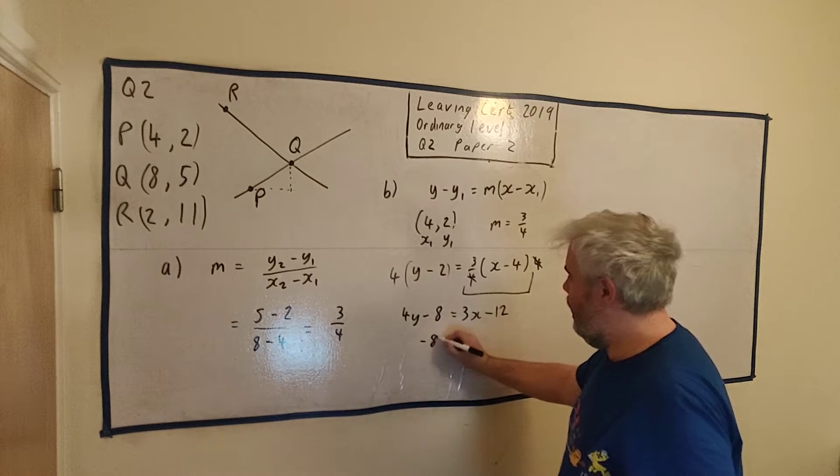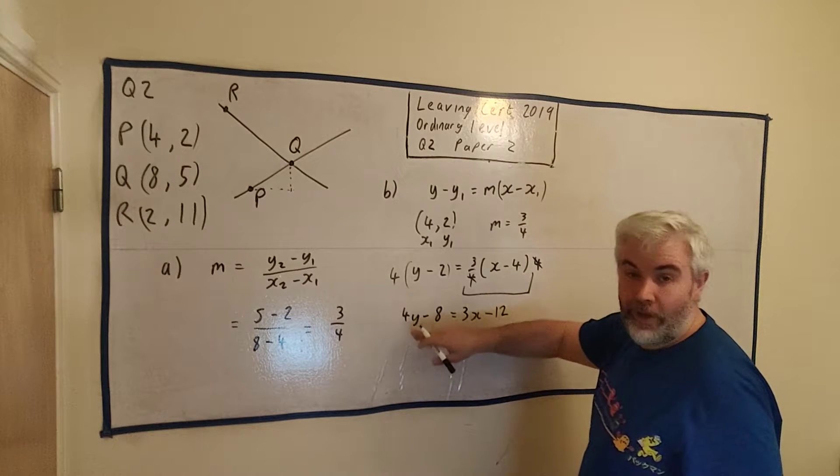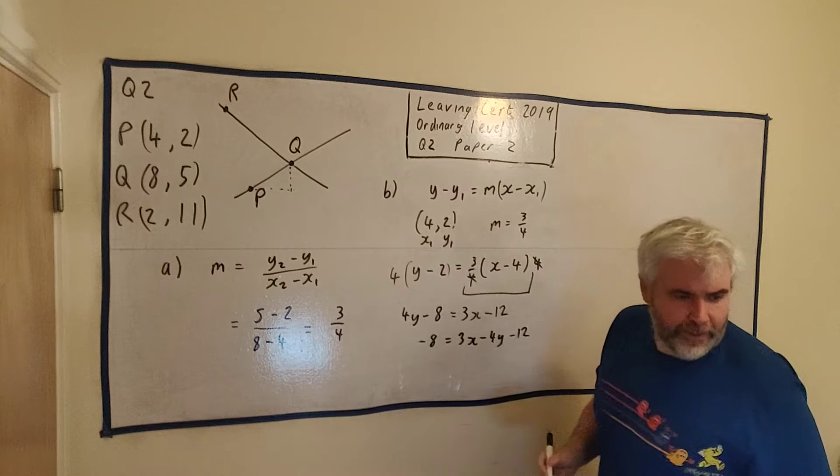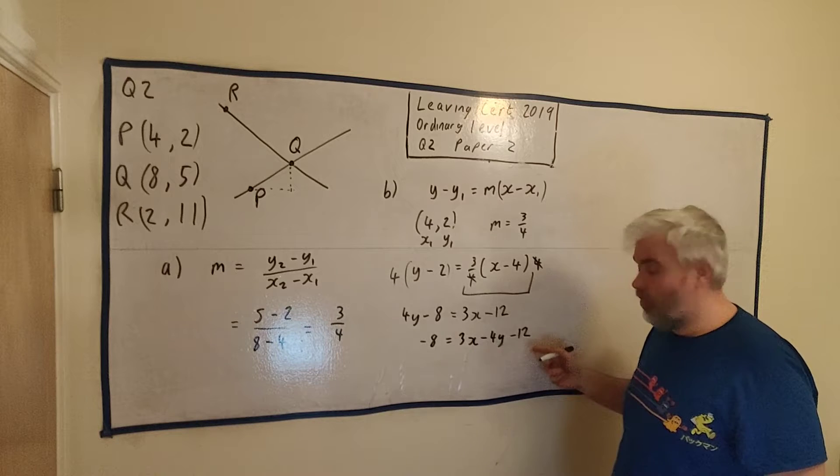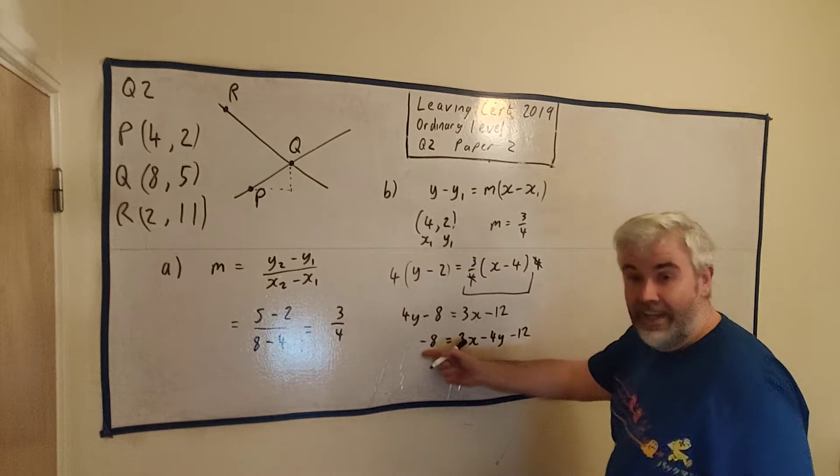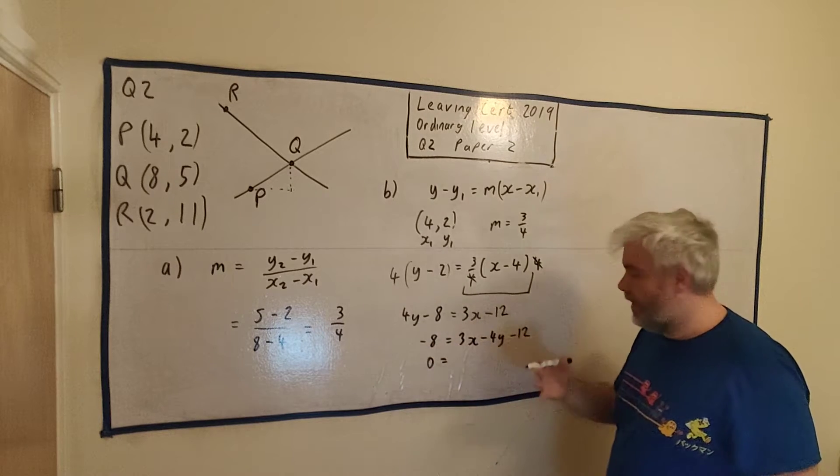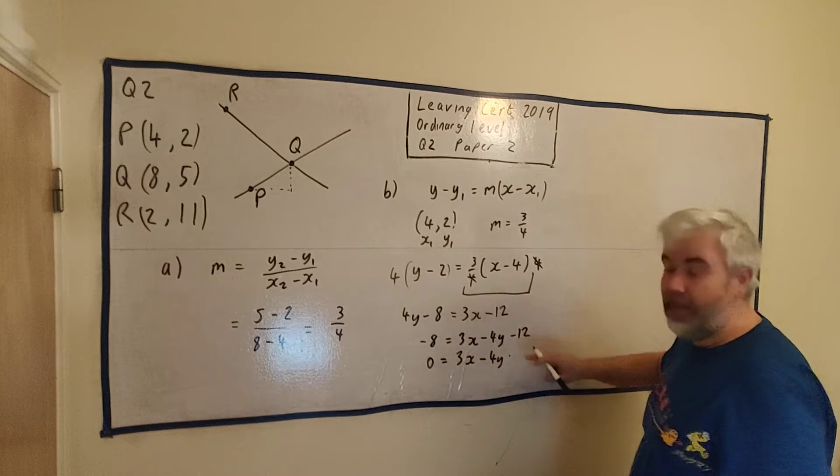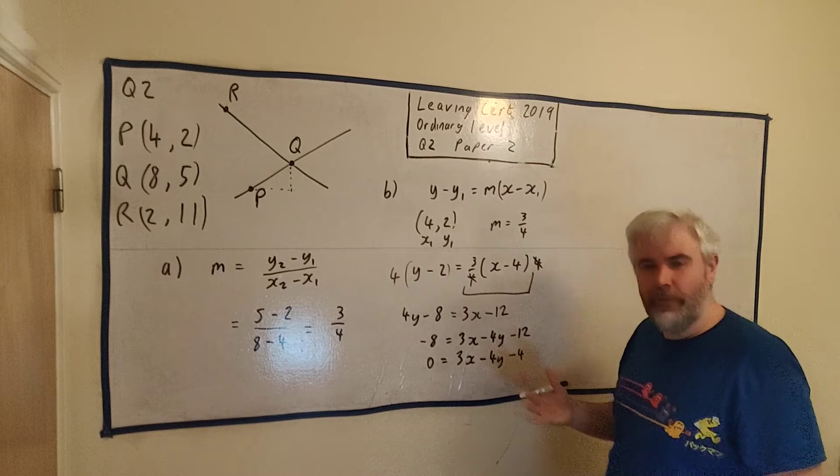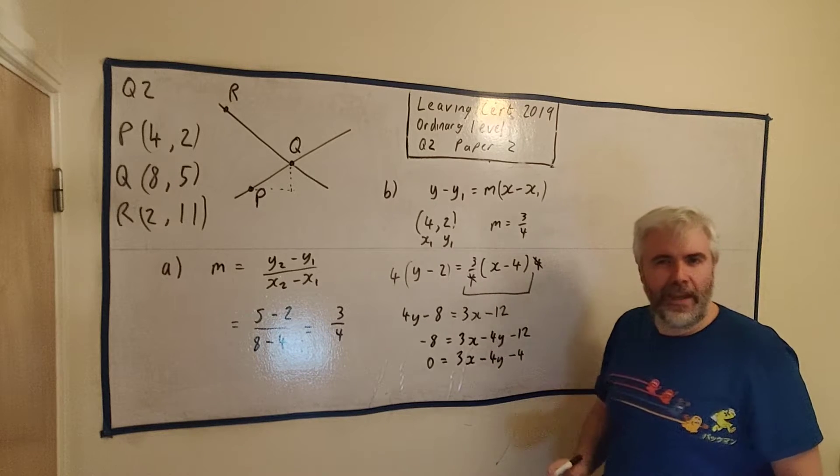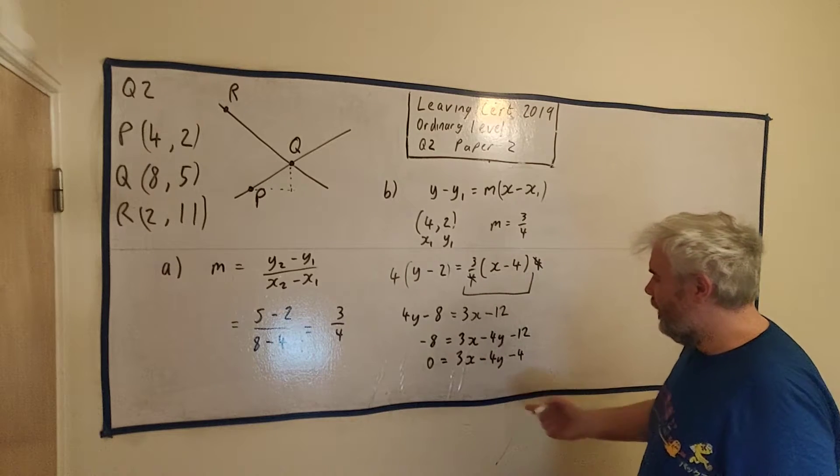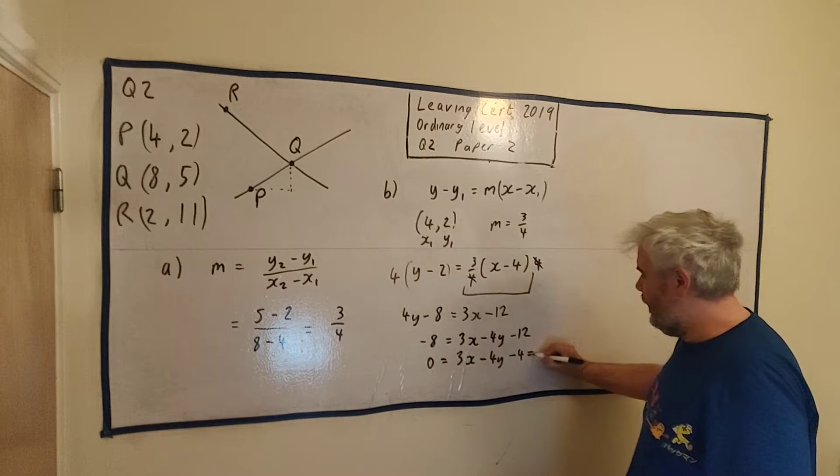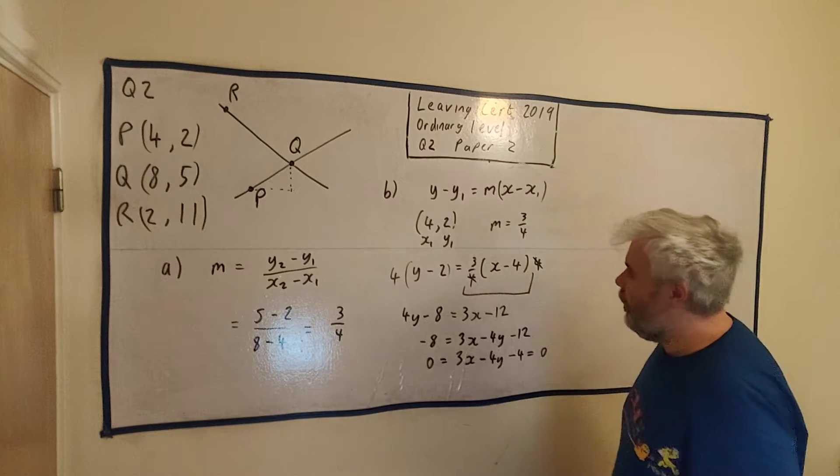We get 3X minus 4Y minus 12. They want numbers and 0 on the other side. Let's add 8 to both sides. So we're at 3X minus 4Y plus 8. Minus 12 plus 8 is minus 4. So 0 equals 3X minus 4Y minus 4. This is 0 equals, which is the same as equals 0. That's full marks for part B.